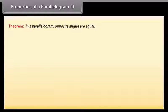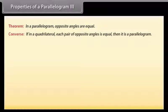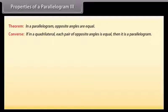Properties of a parallelogram 3: Another property says that in a parallelogram the opposite angles are equal. The converse says that if in a quadrilateral each pair of opposite angles is equal, then it is a parallelogram.